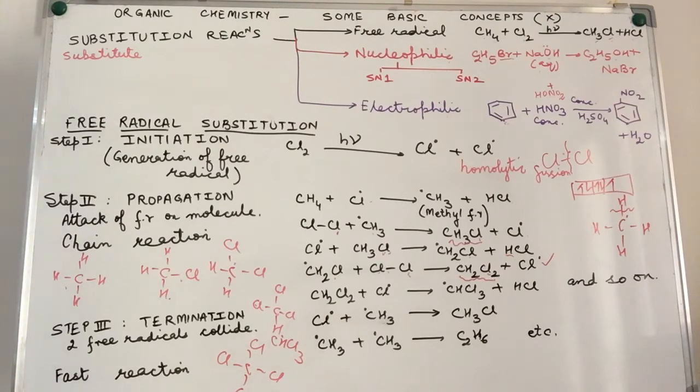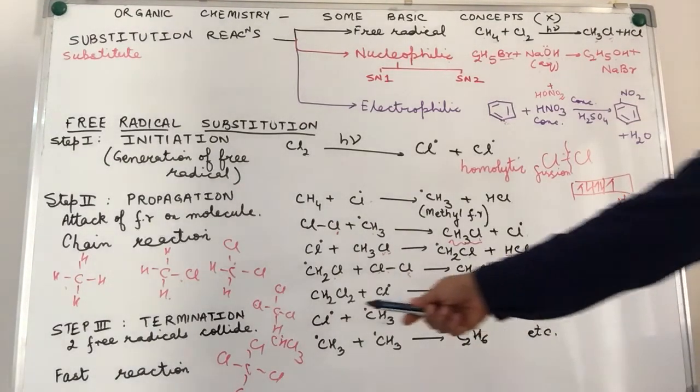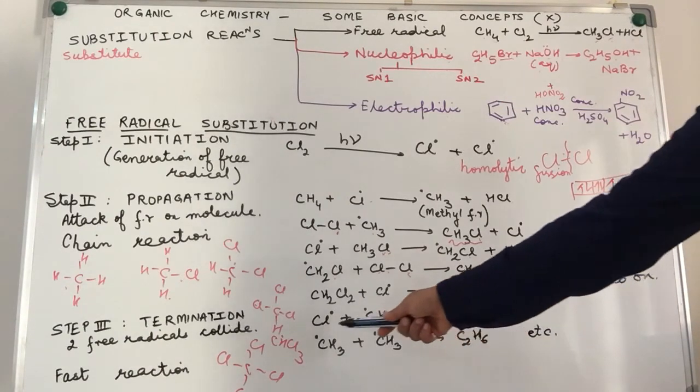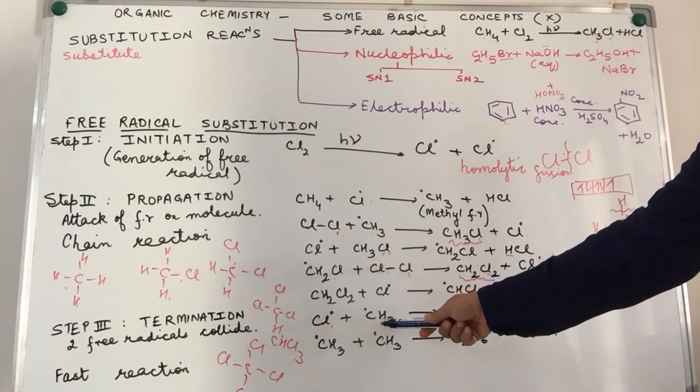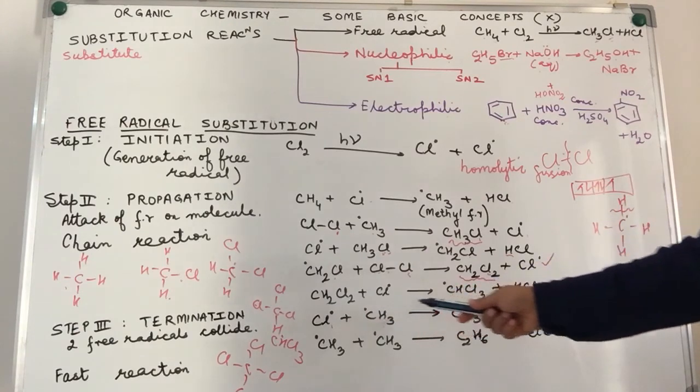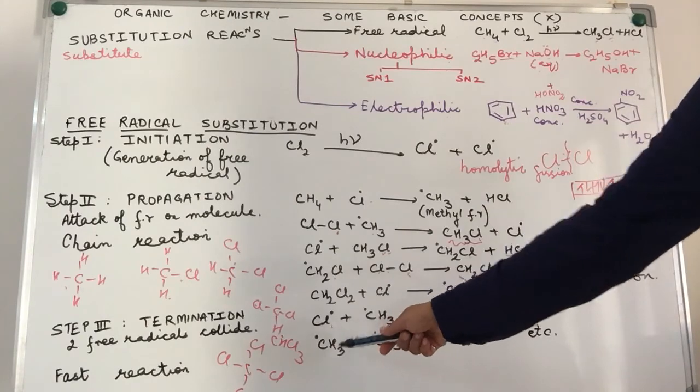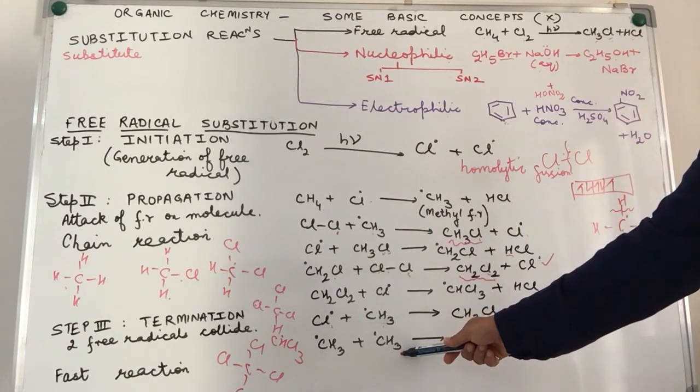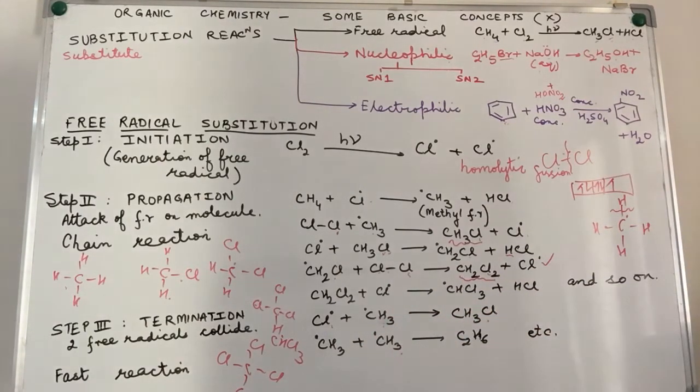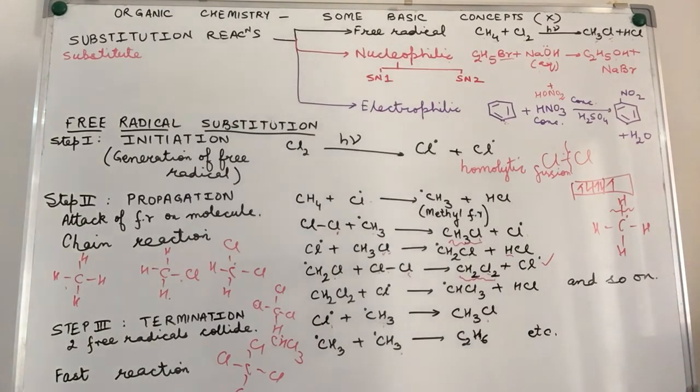It will stop when two very active free radicals who are looking for a partner, they come together. So, I have one, you have one, why not make friends? So, you have chloride free radical combining with another methyl free radical to give us simply CH3Cl or methyl free radical colliding with another methyl free radical giving us C2H6. With the result, what will happen is once the free radicals are not there in the reaction mixture, the reaction comes to a stop.